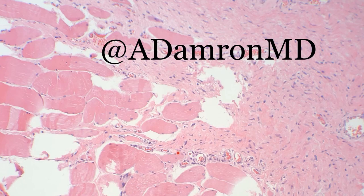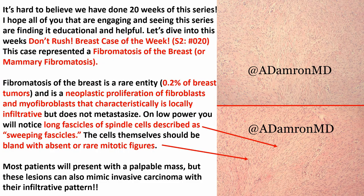Another unique feature of this particular lesion is lymphoid aggregates on the periphery — that's a very unique thing that will help you in the differential diagnosis on H&E. And then you see other areas where the lesion, while pretty bland and benign-looking, is infiltrating into the skeletal muscle — that's worrisome. If it's infiltrating into the surrounding tissue, you're thinking, is this malignant? This case actually represented fibromatosis of the breast, or mammary fibromatosis — a neoplastic proliferation of fibroblasts and myofibroblasts that is locally infiltrative. The long sweeping fascicles are a very characteristic feature of fibromatosis, with very bland nuclei and absent or rare mitotic figures.